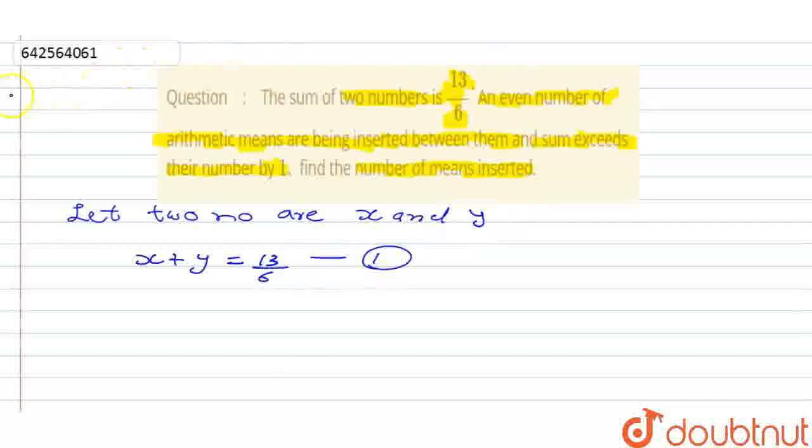Now it is told that even number of arithmetic means are being inserted between them. So we can write that if even number of arithmetic means are inserted between them.